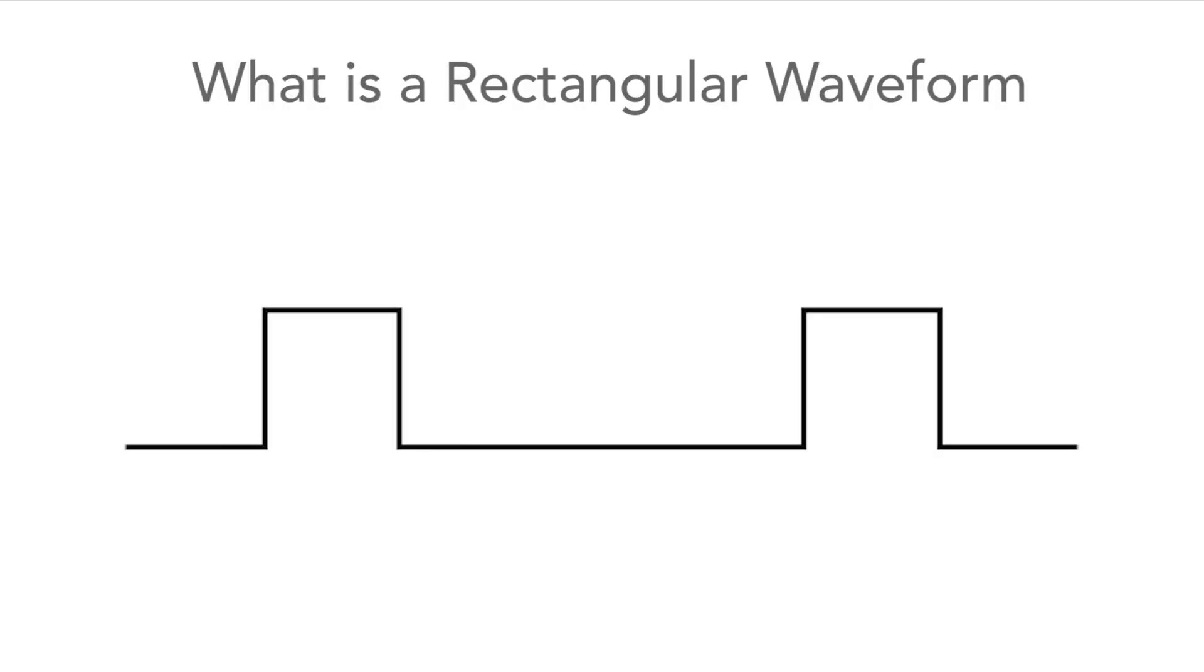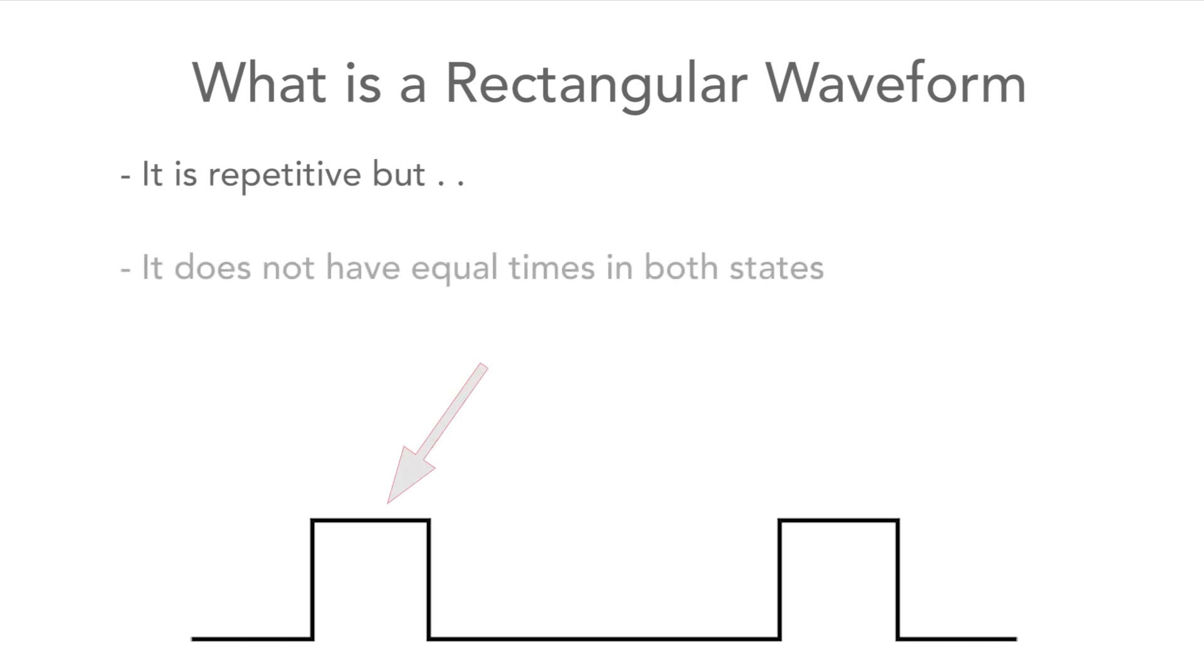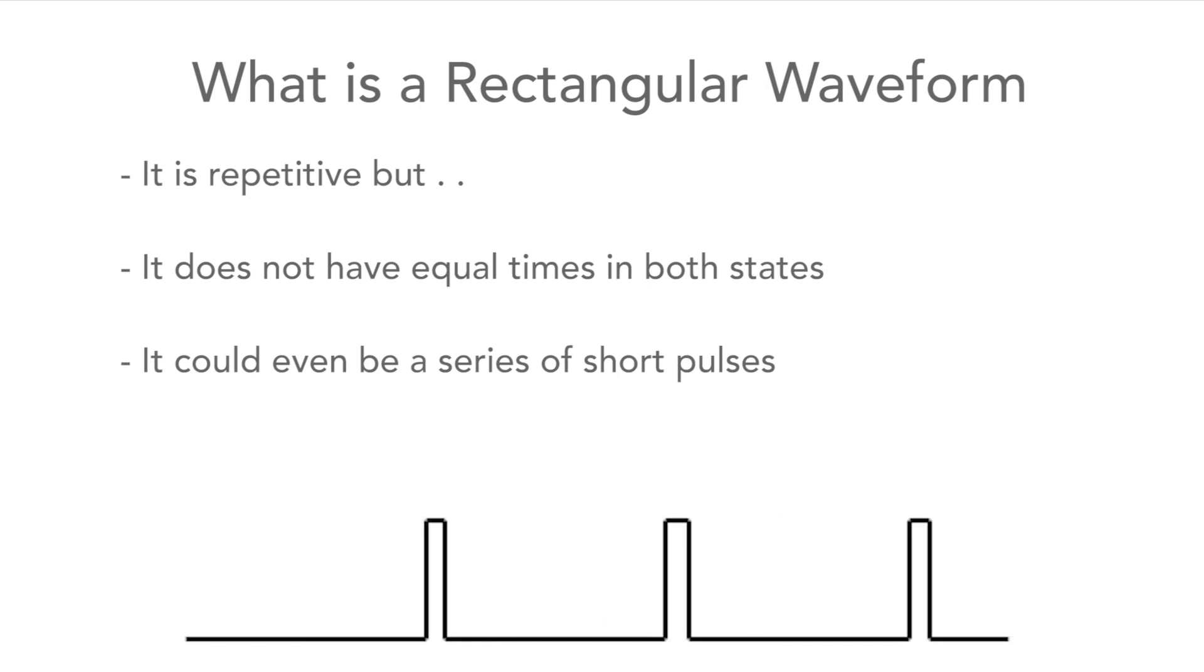Next there is what we can call a rectangular waveform. This is again repetitive but it doesn't have equal times in both states. It could even just become a series of pulses.